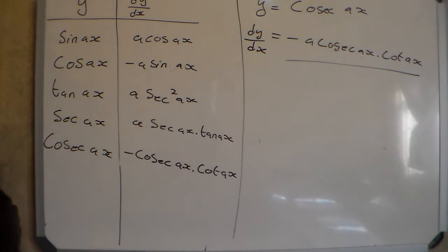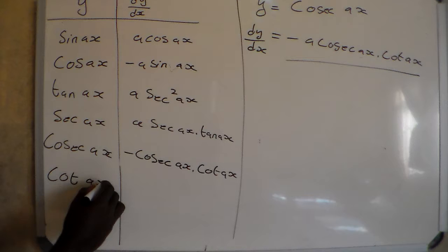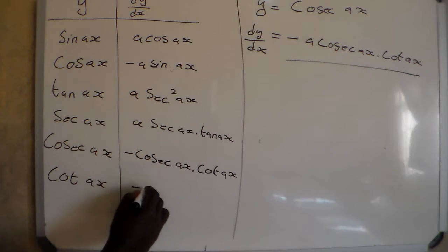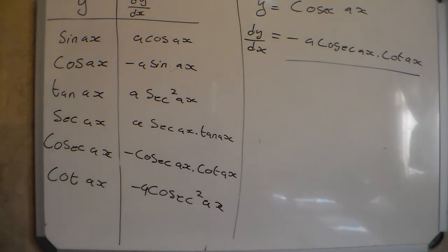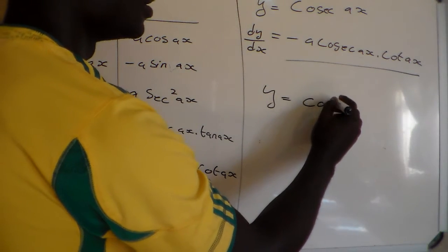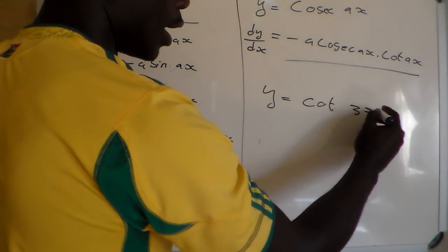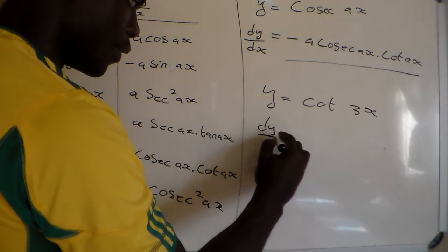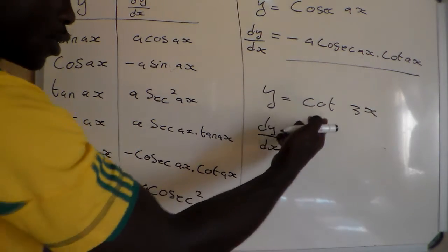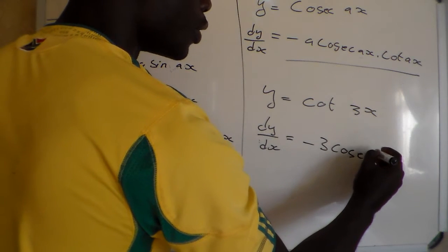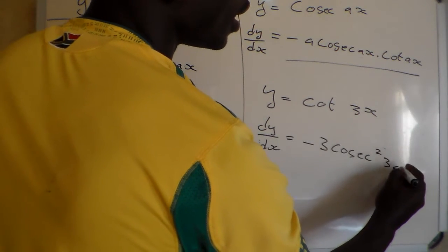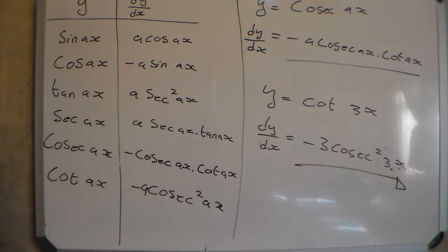And then lastly, we have the derivative of cot. Let's say cot(AX): the derivative of cot(AX) is going to be negative A·cosec²(AX). For an example, Y equals cot(3X), so dY/dX is going to be minus 3·cosec²(3X).